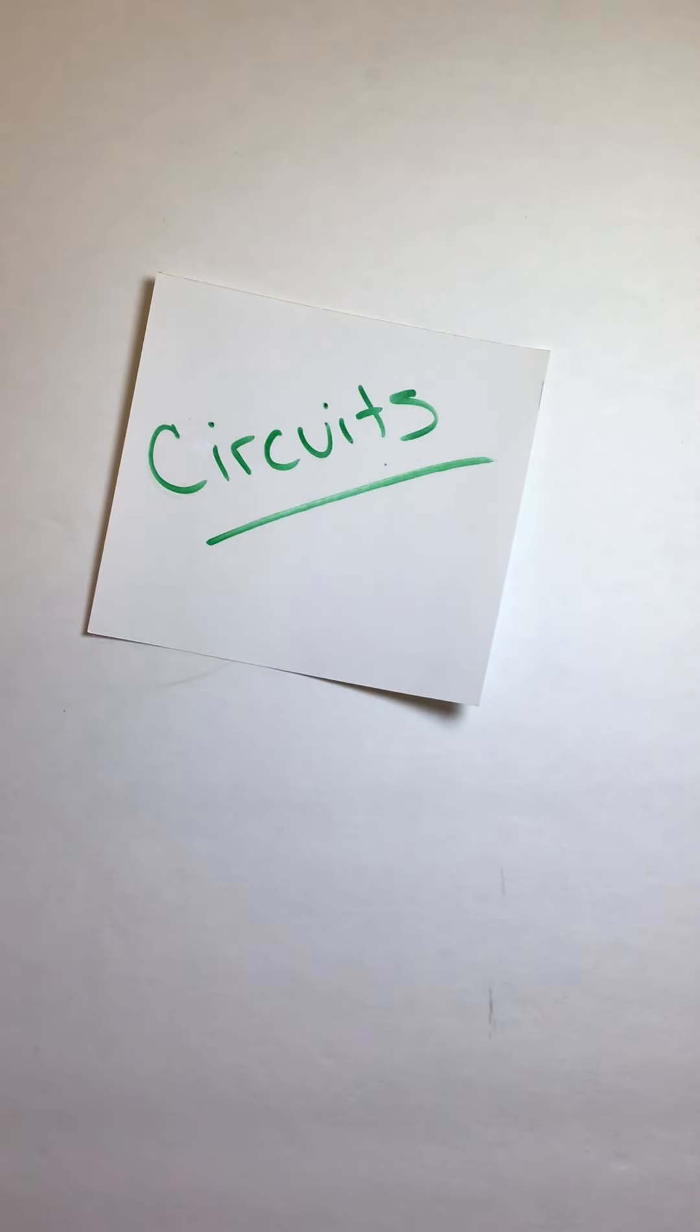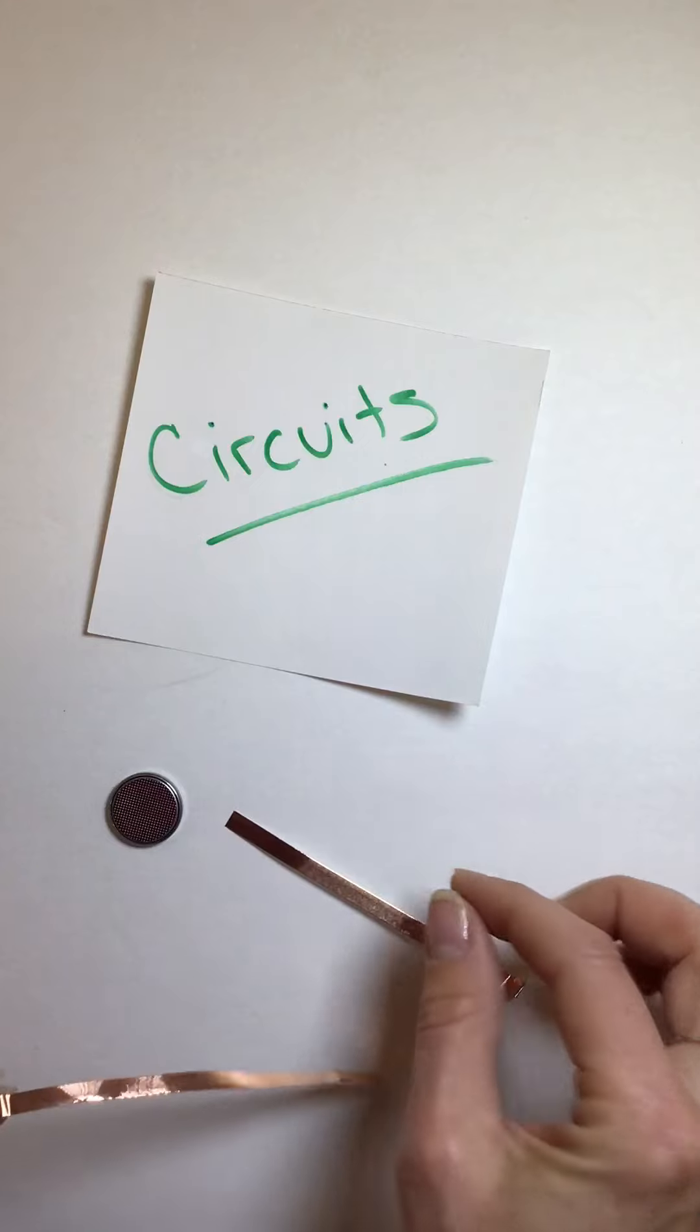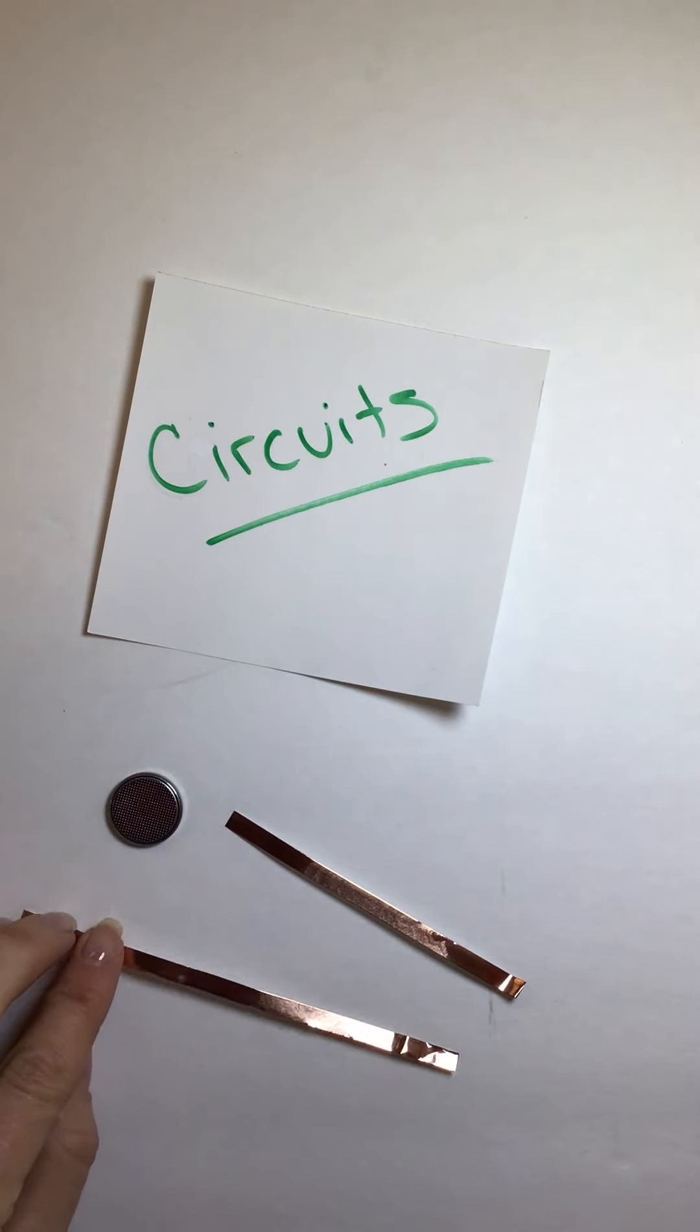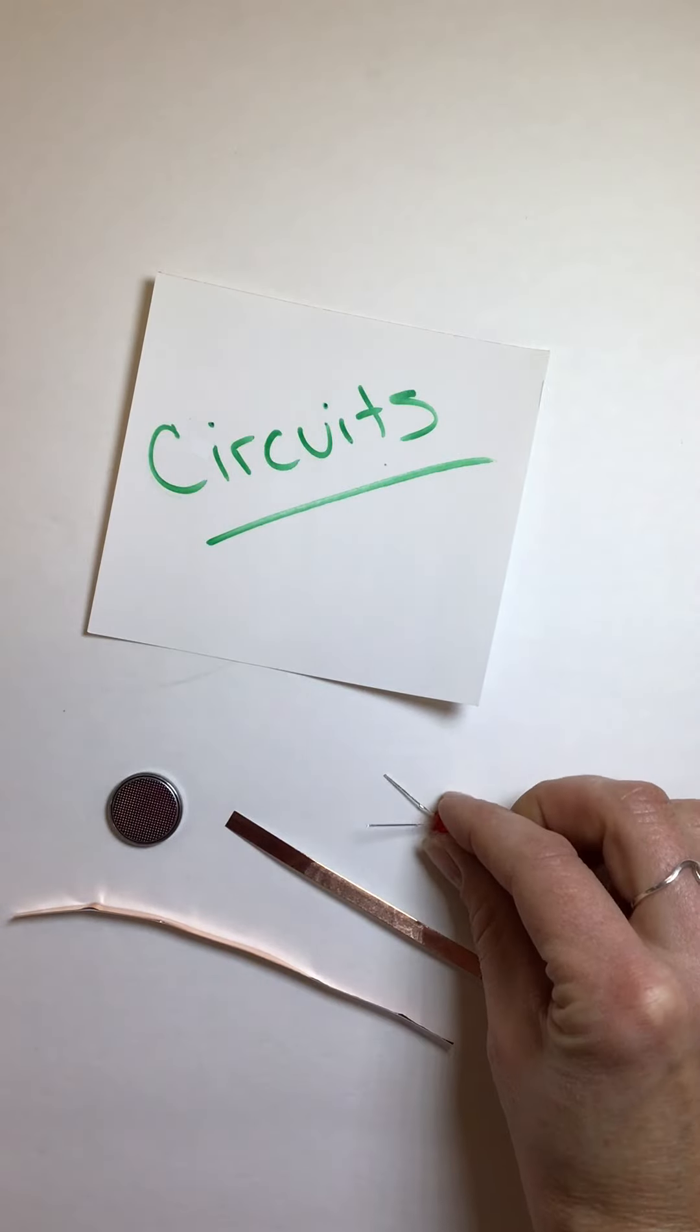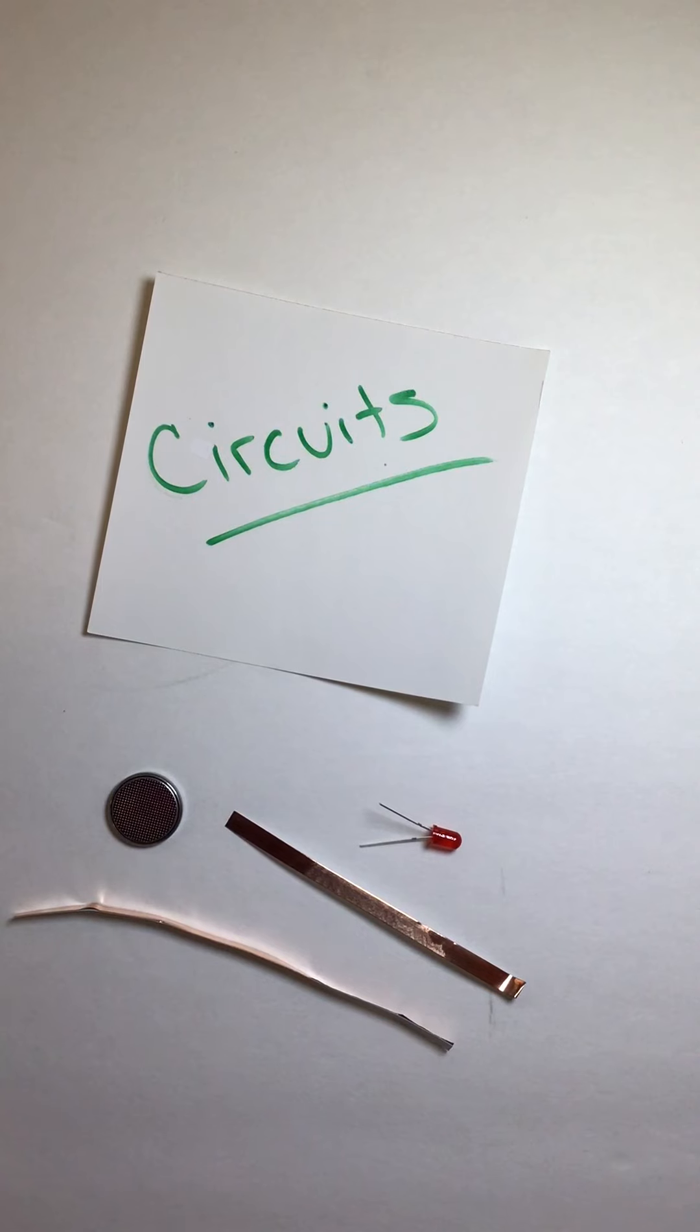Let's talk about what a circuit needs. A circuit needs a power source. It needs some kind of a path to make your electricity run through it. And it needs what's called a load. And a load is something that does something.